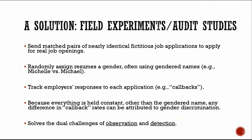To address this challenge, social scientists have developed techniques to measure and understand discrimination. One of these is what we call audit studies, a branch of field experiments. In this type of work, we send matched pairs of nearly identical fictitious job applications to apply for real job openings. We then randomly assign the resumes a gender, often using gendered names — for example, Michelle for a female application and Michael for a male application — while keeping everything else nearly identical. We then track employers' responses, generally referred to as callbacks. Because everything besides the name has been held constant, we can infer from differences in callback rates that discrimination is at play.